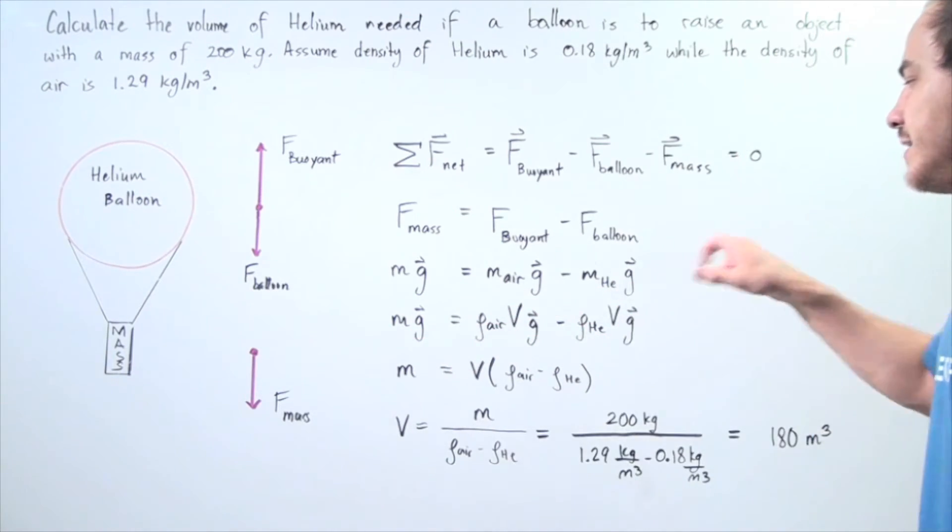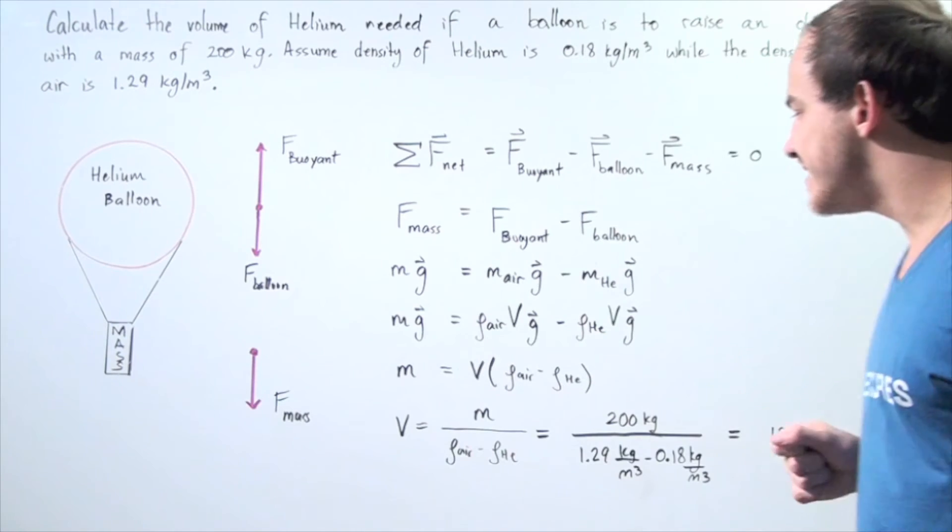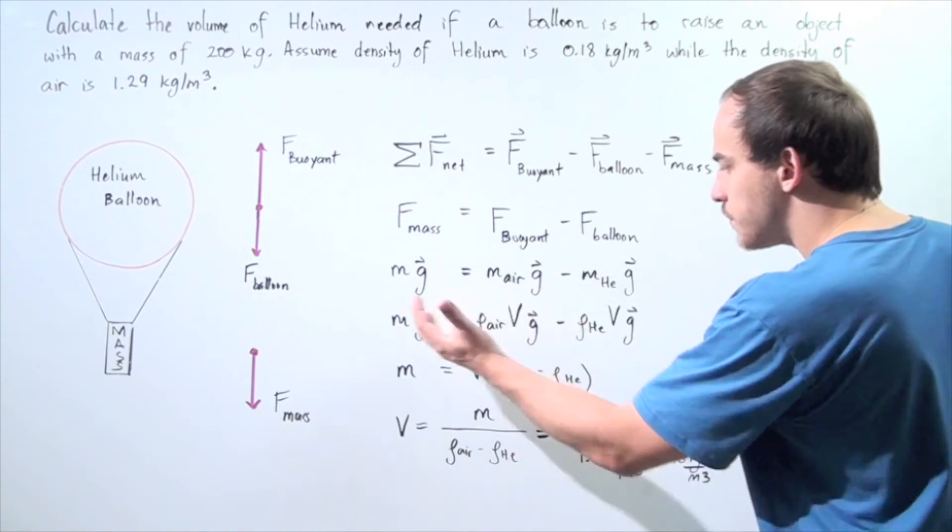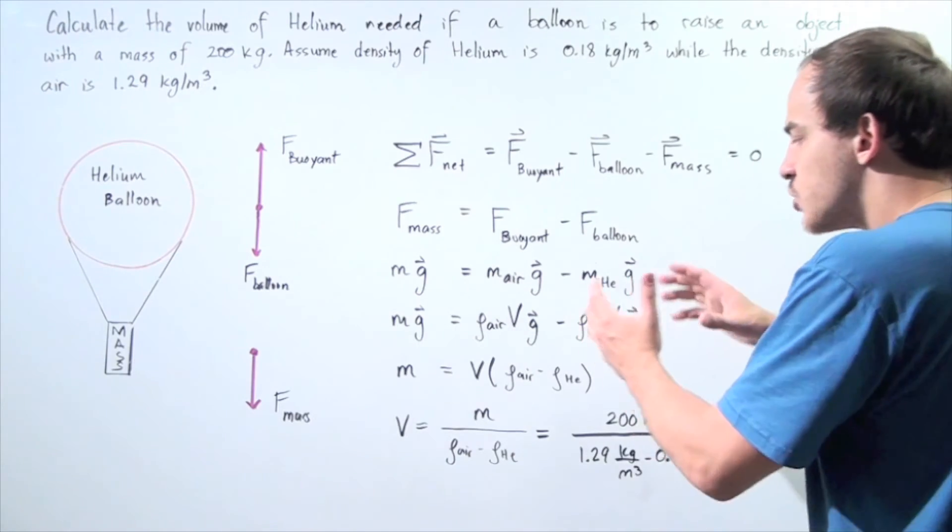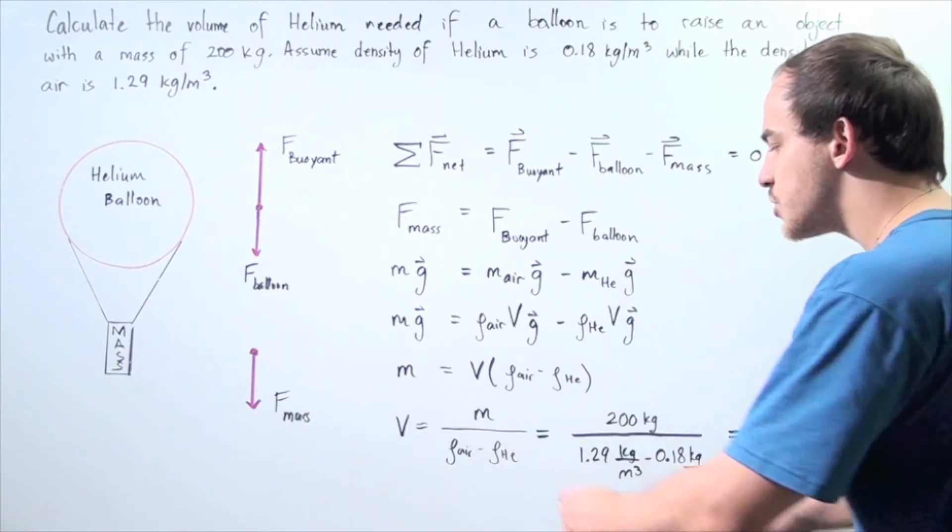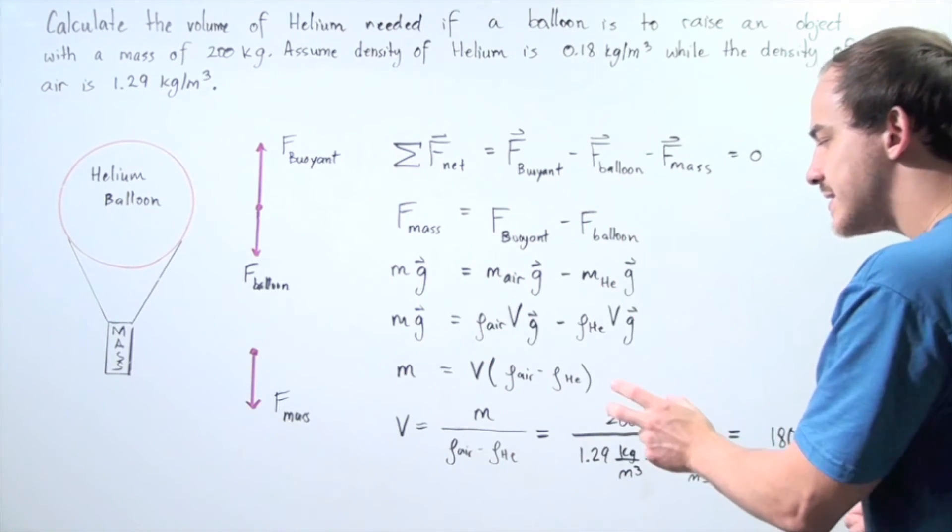Notice the g's appear on each term, so we cross out the g's. And the volume appears on both of these terms on the right side of the equation, so we can take the volume out. We get mass is equal to volume times the difference between the density of air and the density of helium.